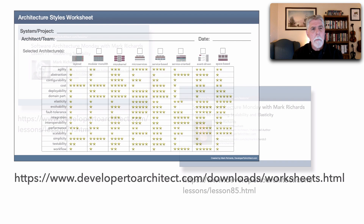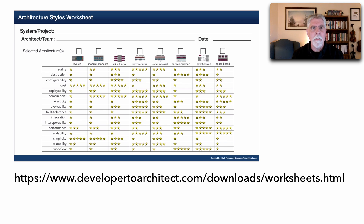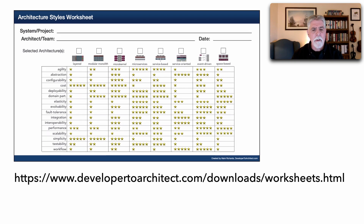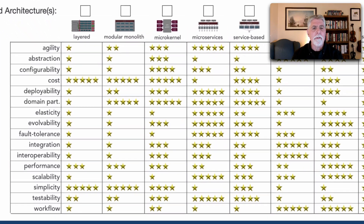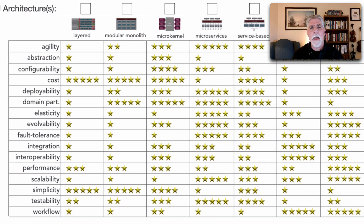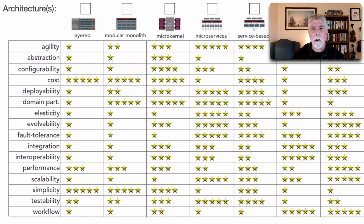I want to come back to some worksheets. In a particular lesson I introduced some of these worksheets, and in this worksheet I included star ratings of various aspects of different architectures and various characteristics — five stars being really good and one star not so good in terms of supporting that particular characteristic.